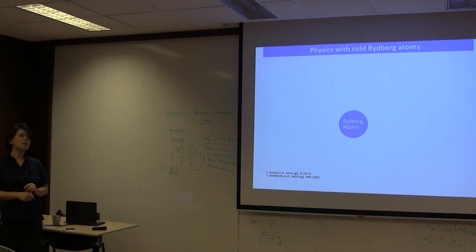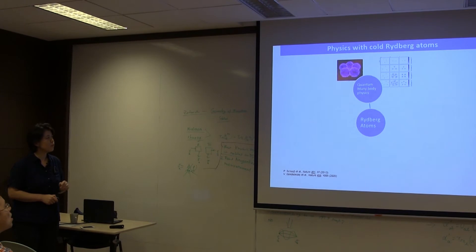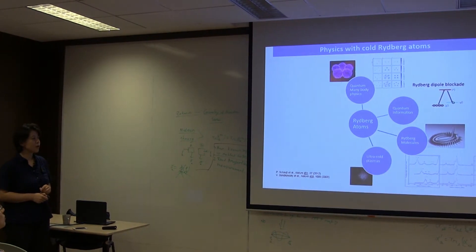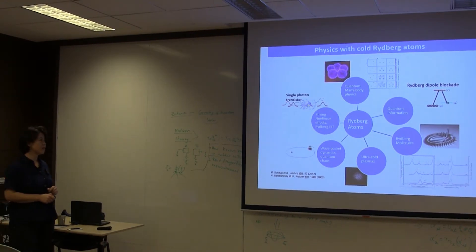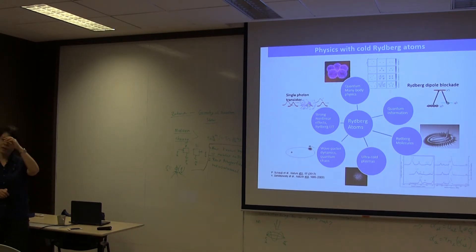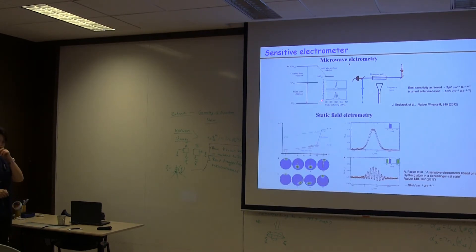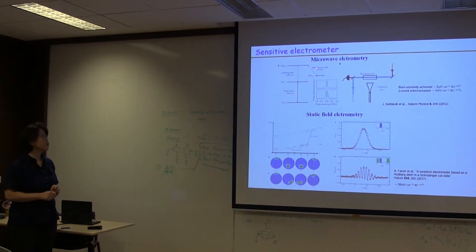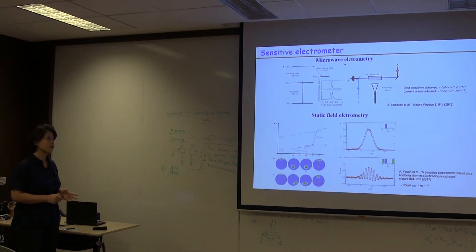With these nice properties of Rydberg atoms, there are many interesting research directions: Rydberg many-body physics, quantum information, Rydberg molecules, ultra-cold plasma, wave packet dynamics, single-photon and strong nonlinear effects of Rydberg EIT. One direction is developing sensitive microwave electrometry, since Rydberg atoms are strongly coupled to external fields — both static and microwave fields in the gigahertz or terahertz range. Using Rydberg EIT with a microwave applied, the EIT window splits, and the splitting depends on the microwave field strength. The best reported sensitivity is about 3 microvolts per centimeter per root hertz — much better than current antenna-based microwave detection.